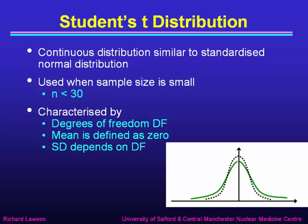Finally, we looked at the Student's t-distribution, which again is a continuous distribution similar to the standardised normal distribution, but we use it when the sample size is small — something less than about 30. It's characterised by something called the degrees of freedom, and again it has a mean defined as 0, but the standard deviation depends on the number of degrees of freedom and is slightly greater than the standard deviation of the normal distribution.